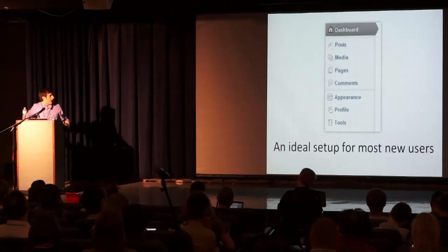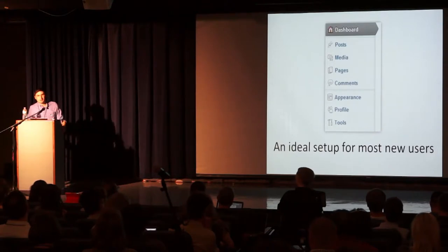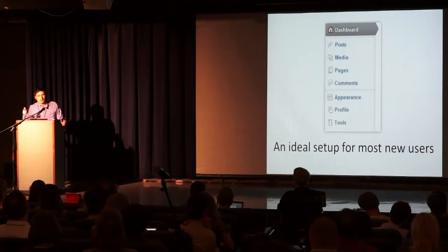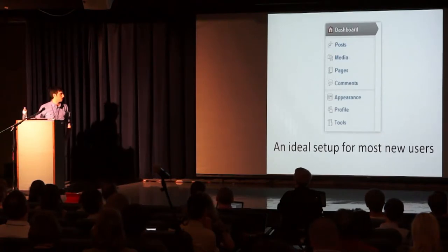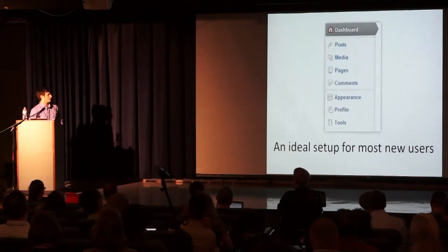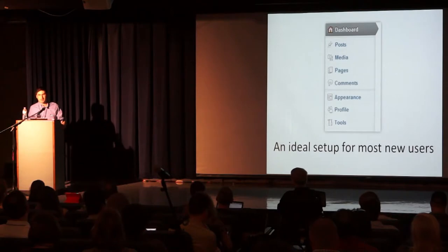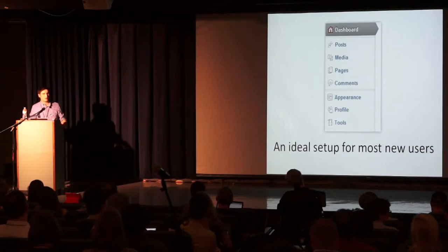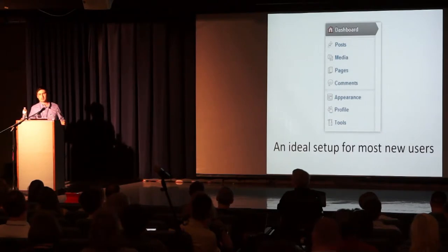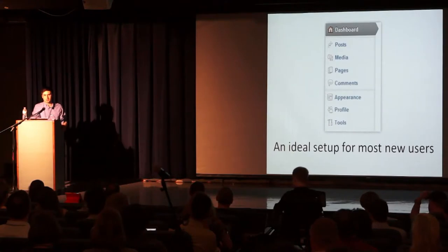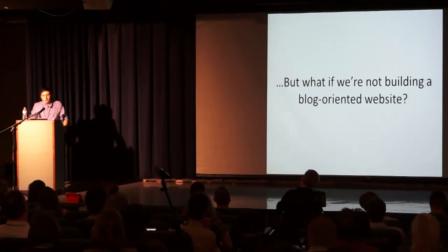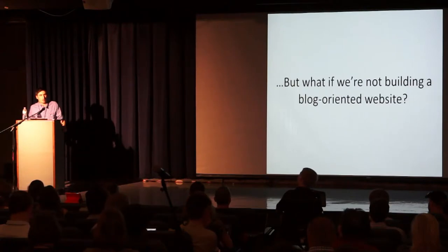You'd set this up in a function and drop it in your functions.php file, and that would really be all you need to do. What I now have is the same menu as before, but now my client also has access to the appearance tab. For a lot of my clients, I find this is a pretty ideal setup — it gives them just enough control over content and appearance without exposing features they don't need. But this is not a hard and fast rule; you're going to want to address this on a case-by-case basis for each project.